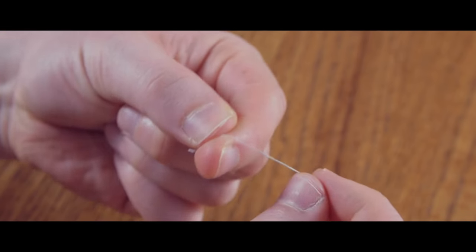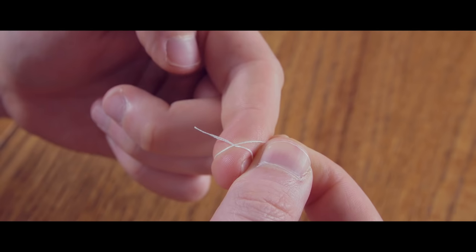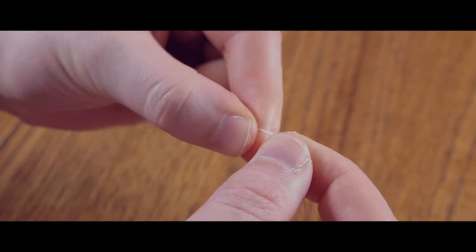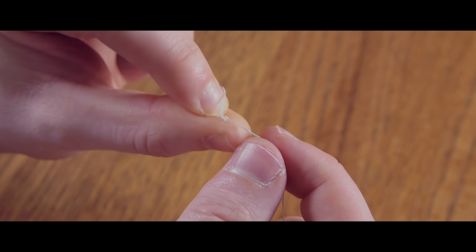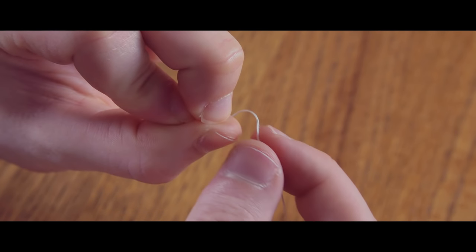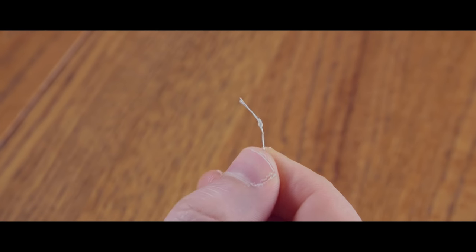To form a knot, wrap the thread around your index finger to form an X. Pinch the X between your index finger and thumb, then slide your index finger back, letting the thread roll forward. Bring your middle finger down in front, then pull the thread with your other hand. You will be left with a solid knot that won't come undone.